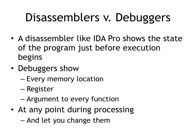A disassembler is a static code analysis technique. It reads the binary and tries to turn it into assembly language so you can read it. Some disassemblers, like Hopper, will actually turn it further into pseudocode which looks like C, although it's not accurate enough to compile as C.